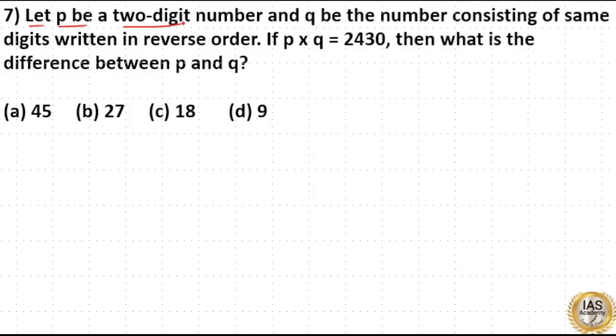Let P be a two-digit number and Q be the number consisting of same digits written in reverse order. If P×Q is equal to 2430, then what is the difference between P and Q?